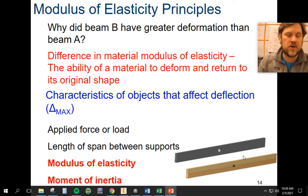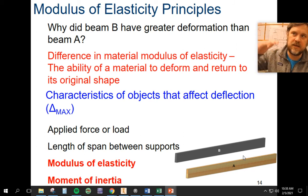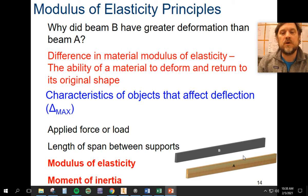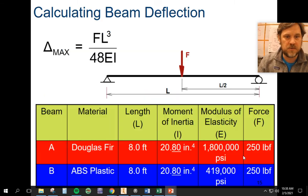The next thing that we're going to talk about is span and load and those kinds of things. We're going to talk about anytime we see the triangle, that means change. So the delta max is what's the max something can bend without breaking. So we're going to talk about the applied force and the length of the span between the supports.